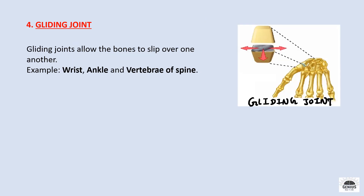The fourth type of joint is the gliding joint. This type of joint allows the bones to slip over one another, and is found in our wrist, ankle, and vertebrae of the spine. It helps the back to bend and twist.